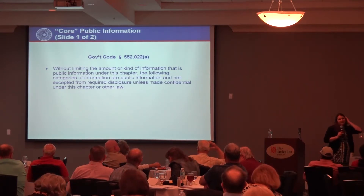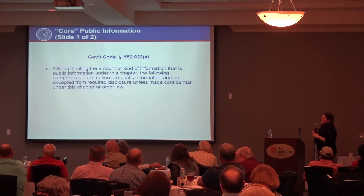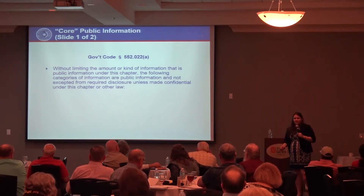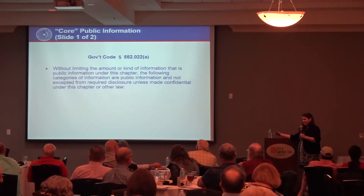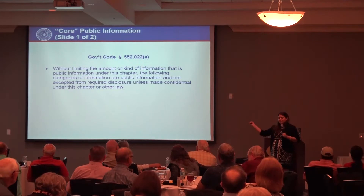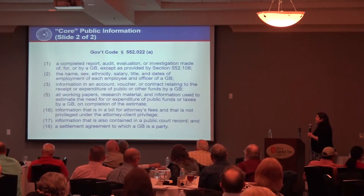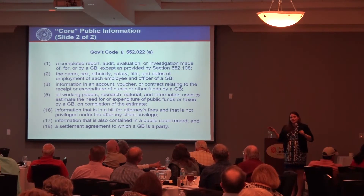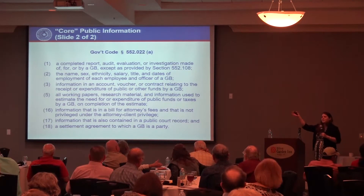Section 552.022 covers what we call core public information. The legislature has said this information is so important for the public to know that even if you raised exceptions timely and did everything correctly, you still cannot withhold it unless there's a confidentiality provision. Most examples deal with the expenditure and receipt of public money.